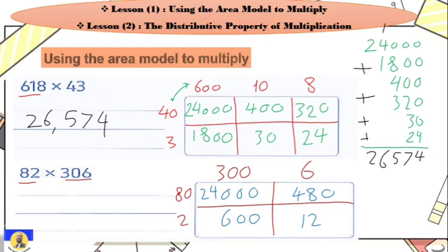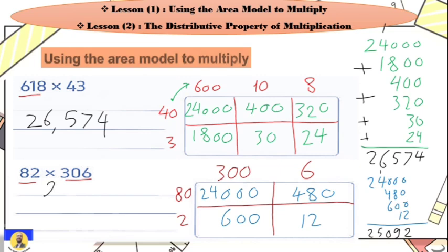Then we start to make plus between all these numbers. We have twenty-four thousand three hundred, then four hundred eighty, then six hundred, then twelve. So: zero plus zero plus two equals two. Zero plus eight plus zero plus one equals nine. Four plus six equals ten — zero carry up one — so five, and here it's two. So the answer will be twenty-five thousand and ninety-two.